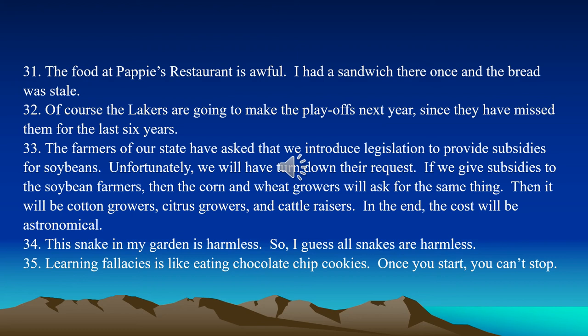Number thirty-two: Of course the Lakers are going to make the playoffs next year since they missed them for the last six years. This is an example of the gambler's fallacy — the idea that previous losing is going to cause future winning.